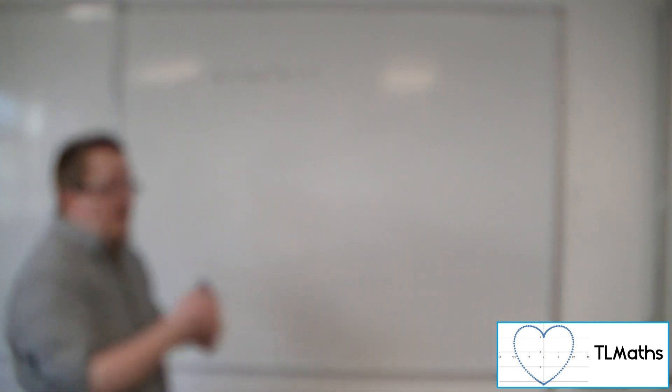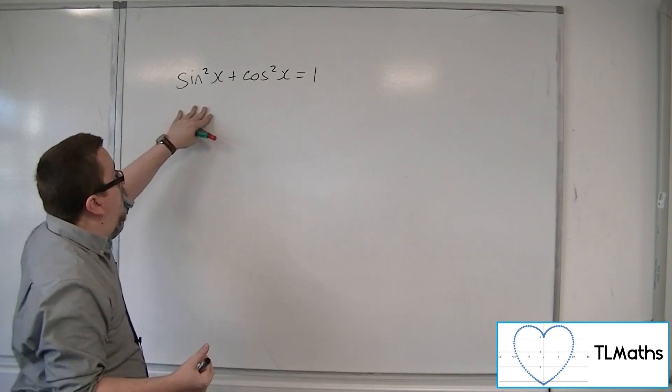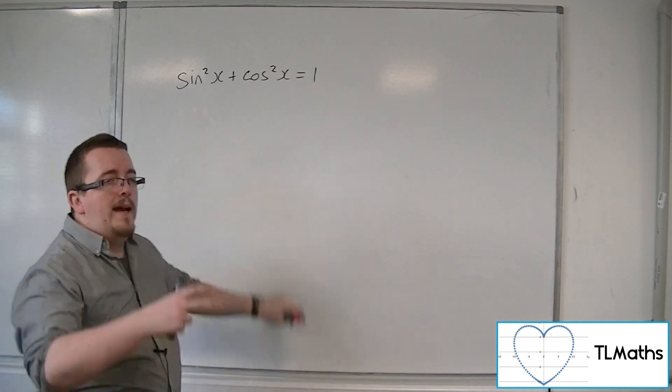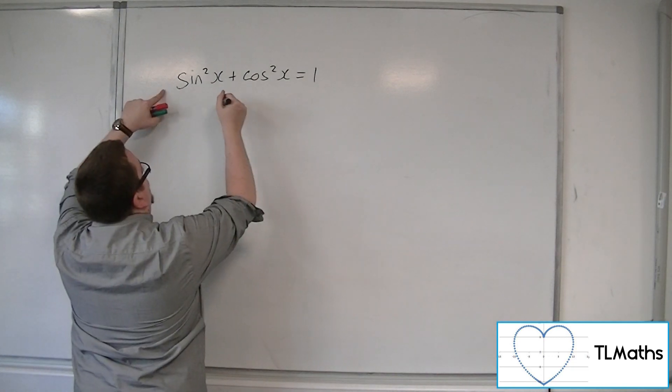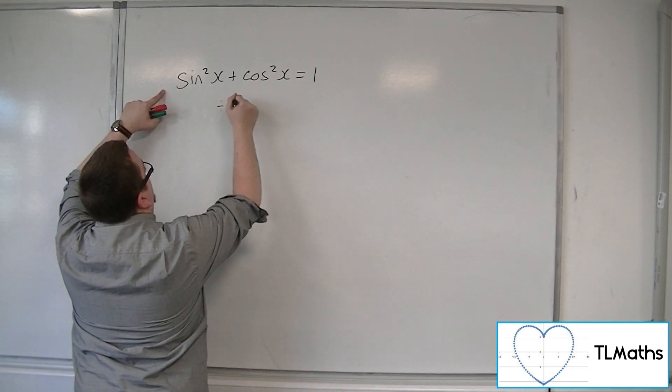So, the method is if I take sine squared plus cos squared equals 1 and divide each of the terms by sine squared, for example. So, let's divide through by sine squared.